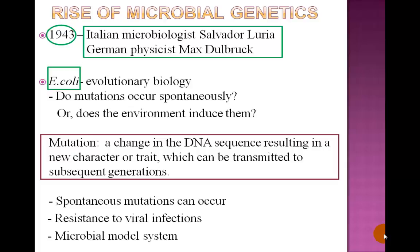In 1943, Italian microbiologist Salvador Luria and German physicist Max Delbrück worked on the genetics of the bacteria E. coli. They wanted to know if mutations occur spontaneously or if the environment induces them. A mutation is a change in the DNA sequence or trait which can be transmitted to subsequent generations. They concluded that bacterial cells could develop spontaneous mutations and that those mutations could give rise to resistance of bacterial cells to viral infections.